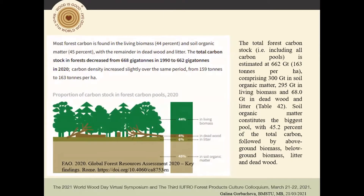The total forest carbon stock is estimated at 662 gigatons, comprising 300 gigatons in soil organic matter, 295 gigatons in living biomass, and 68 gigatons in dead wood and litter.